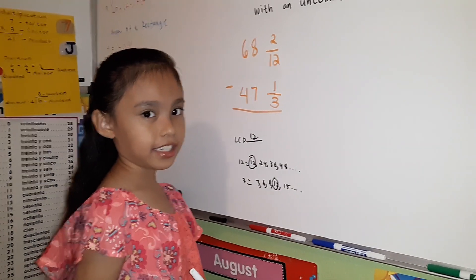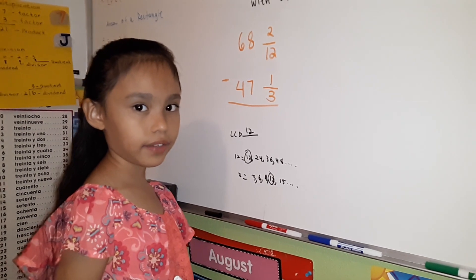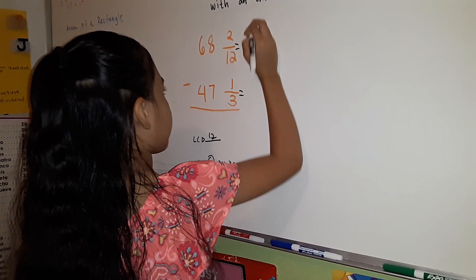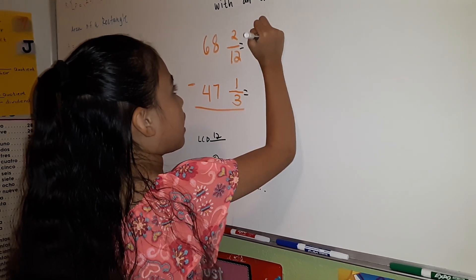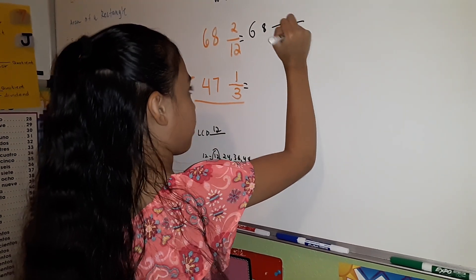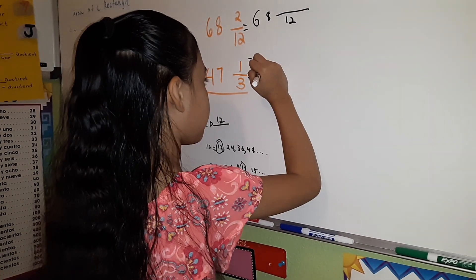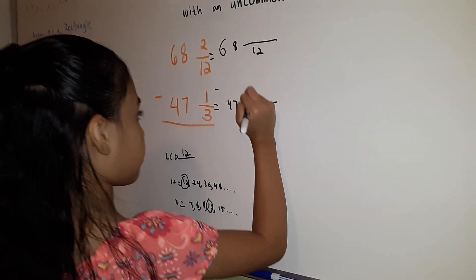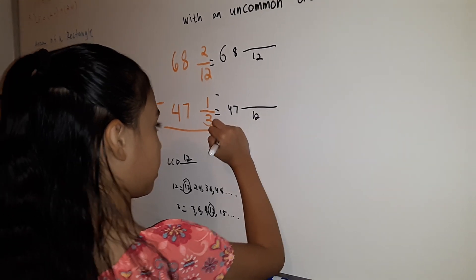We're going to change the denominator into 12, but first we're going to write the whole numbers. 68 and blank/12 minus 47 and blank/12 equals.